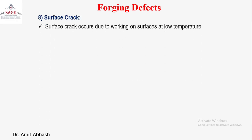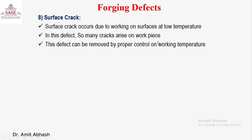The last defect is surface crack. Surface cracks occur due to working on surfaces at low temperature. The surface crack is mainly due to thermal stress that is developed at the surface. When you are performing hot forging, due to thermal stress, and if the cooling action is not proper, it may be there. Some excessive amount of pressure you have applied may also lead to surface crack. In this defect, many cracks arise on the workpiece. This defect can be removed by proper controlling of the working temperature. You can also add extra points: working pressure and the force you are applying — the die should also be properly designed. The cracks look like this; you may not be able to see them by your naked eye, but while you see the microstructure, you can easily see these defects.